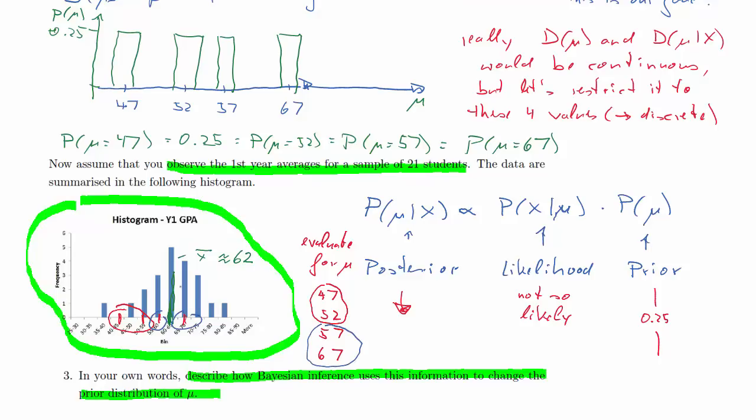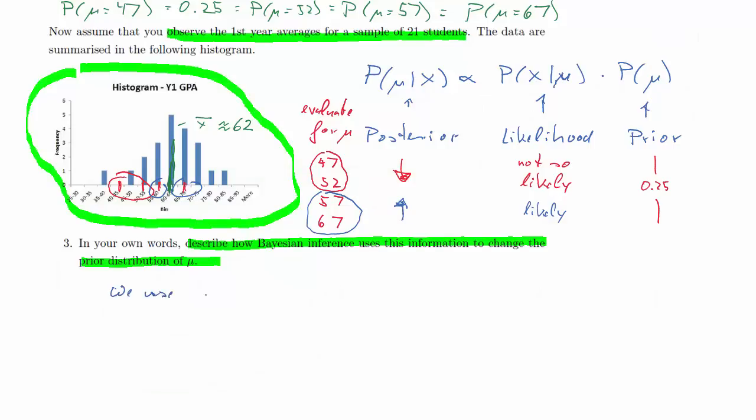The other two values, 57 and 67 seem to be sort of equally plausible. And therefore we will see that relative to the prior, the posterior distribution will go up for these two values.